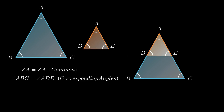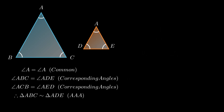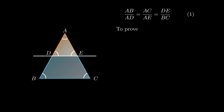Angle ABC equals angle ADE, and angle ACB equals angle AED, since corresponding angles are equal if lines are parallel. Therefore, by the Angle-Angle-Angle criteria, triangle ABC is similar to triangle ADE, which implies the corresponding sides of triangle ABC and triangle ADE are proportional — that is, AB upon AD equals AC upon AE, and DE upon BC.